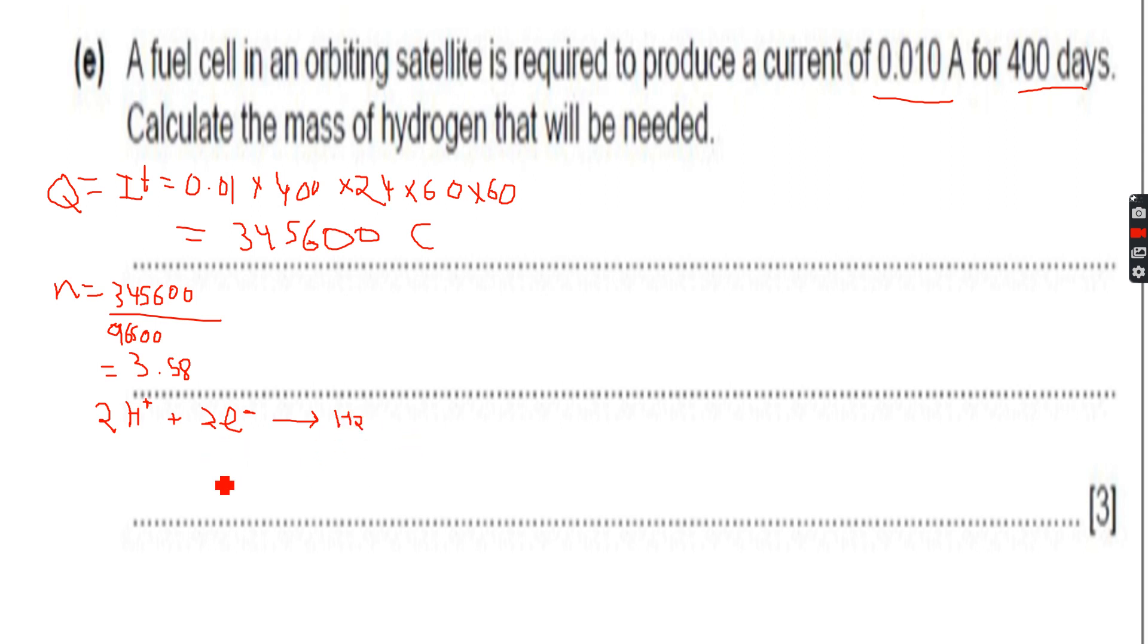The number of moles of H2 will be 3.58 divided by 2, which is 1.79. The mass of hydrogen will be n into the molecular mass, not Ar, because hydrogen gas is always present as a molecule H2.